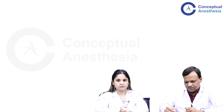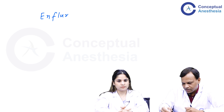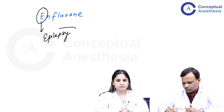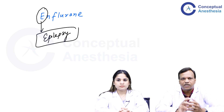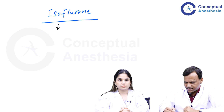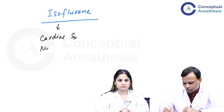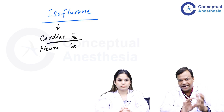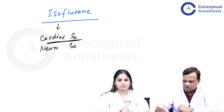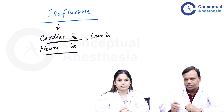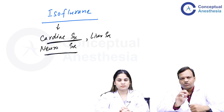Apart from halothane, enflurane is another rarely used agent. The important point about enflurane is that it increases the risk of seizures and is therefore contraindicated in epileptic patients; we also avoid it in other patients. Then we have isoflurane. The special characteristic of isoflurane is that it is the preferred anesthetic agent for cardiac surgery as well as neurosurgery, because it does not depress the heart to a great extent, maintaining cardiac output. Blood flow to different organs including the liver is maintained, and it does not increase intracranial tension as much as other agents.